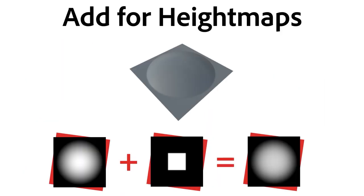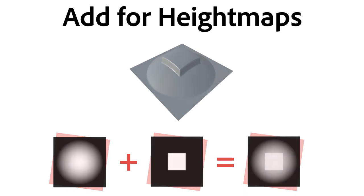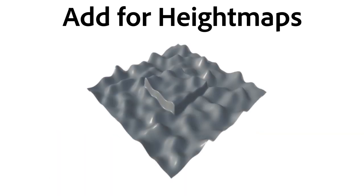For height maps, Add works like an outward extrude. The whiter something is, the more it is extruded. Notice that the shape of the bottom layer is preserved when you add something to it.